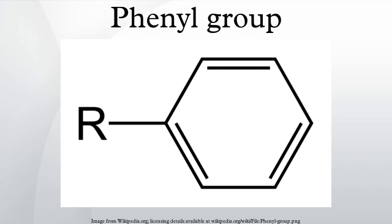In organic chemistry, a phenyl group or phenyl ring is a cyclic group of atoms with the formula C6H5. Phenyl groups consist of six carbon atoms bonded together in a hexagonal planar ring, five of which are bonded to individual hydrogen atoms, with the remaining carbon bonded to a substituent.